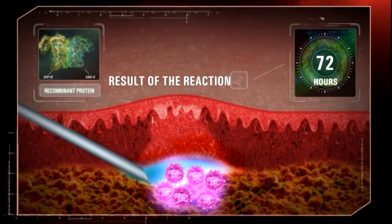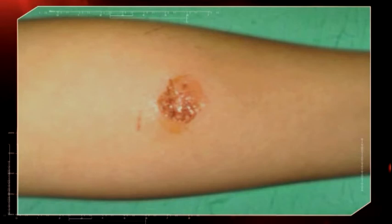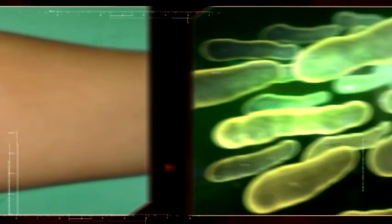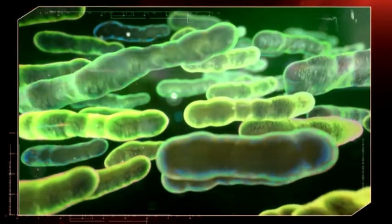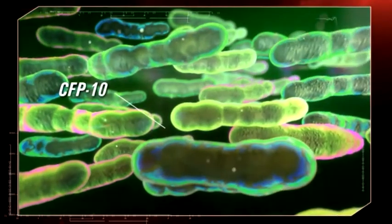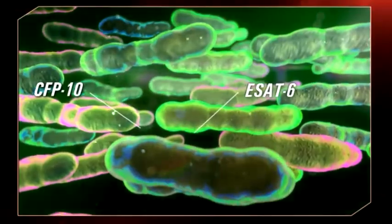The Diaskintest gives positive reactions with papilla of any size, with active proliferation of mycobacteria and adequate immune response on specific antigens, CFP10 and ESAT6, in persons with high disease risk and at early stages of active tuberculosis infection.